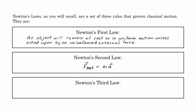Newton's second law is that F net equals MA. If we want to describe this law in words, when you're looking at the acceleration of an object, that acceleration is directly proportional to the unbalanced force acting on it, and inversely proportional to the mass. So F net equals MA is of course where we start most of our problems using Newton's laws.